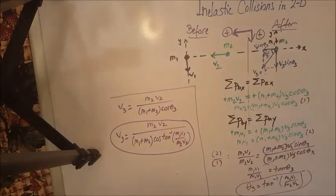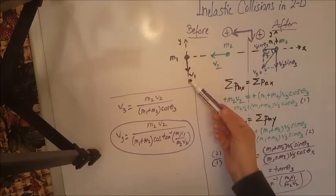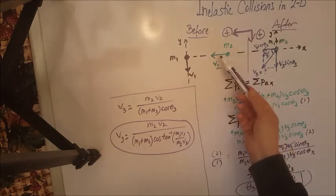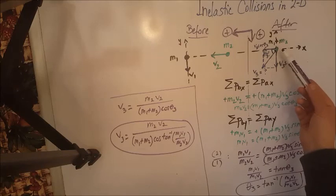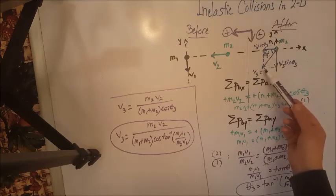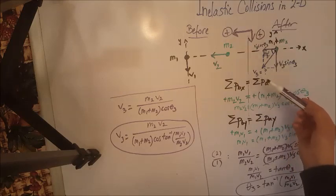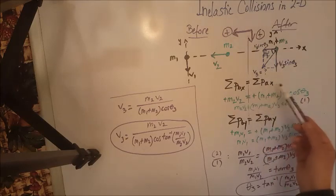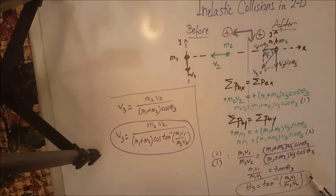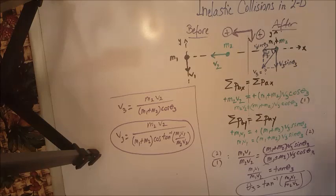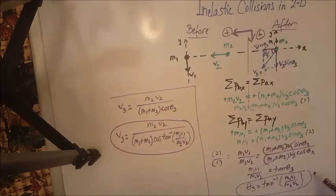So once again, we solved an inelastic collision problem where before collision one object was moving south and the other was moving west. After collision the objects stick together — it's an inelastic collision — and the newly formed object of mass M1 plus M2 moves in the third quadrant with speed V3 at angle theta 3 below the x-axis. We applied conservation of momentum for both X and Y after resolving V3, then eliminated V3 by dividing the two equations to get theta 3, and substituted back to find V3.